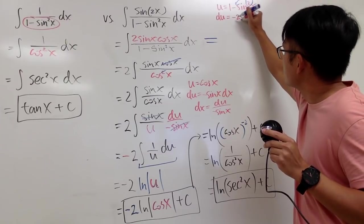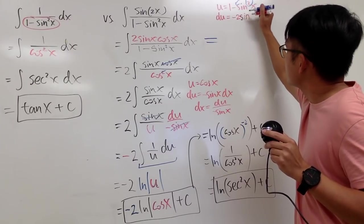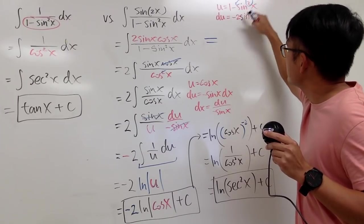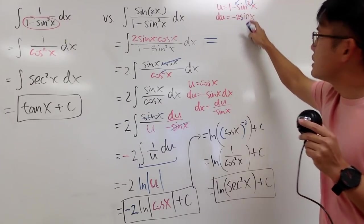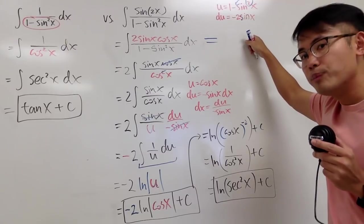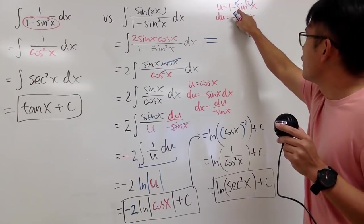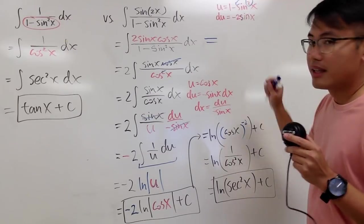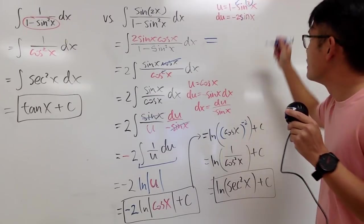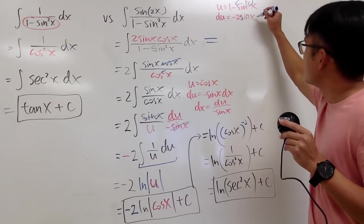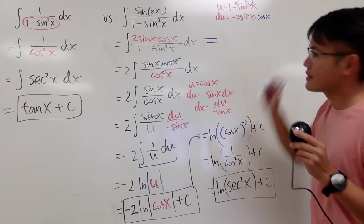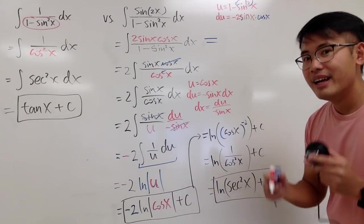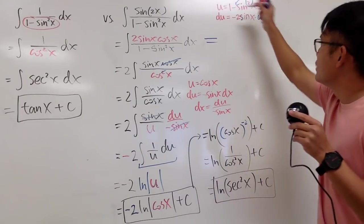Because of the chain rule, we have to multiply by the derivative of sine x, so we multiply by cosine x.